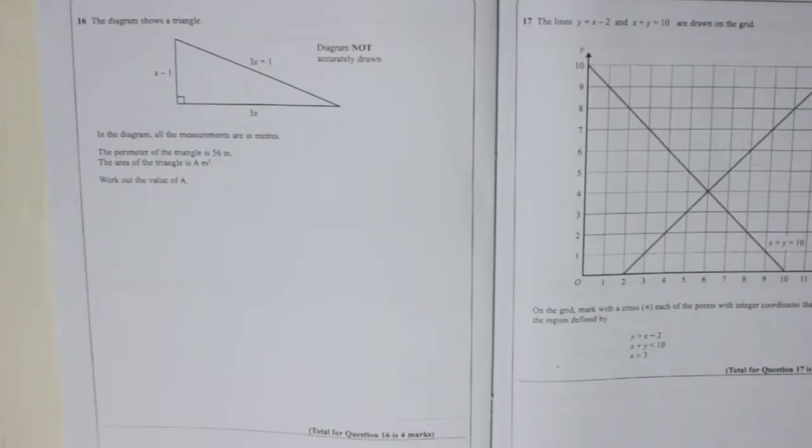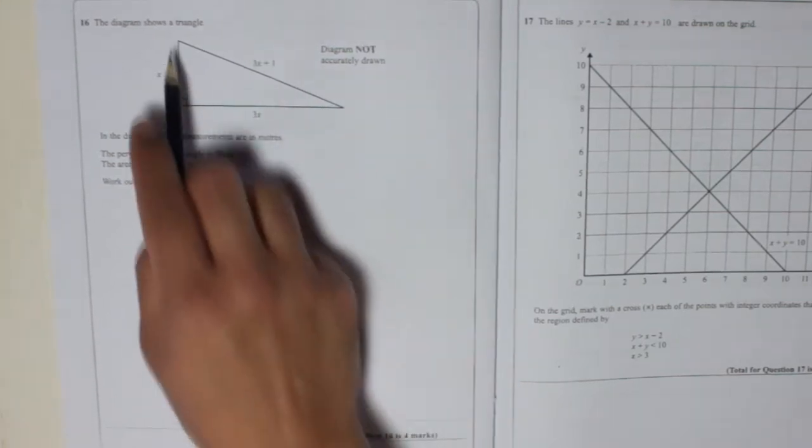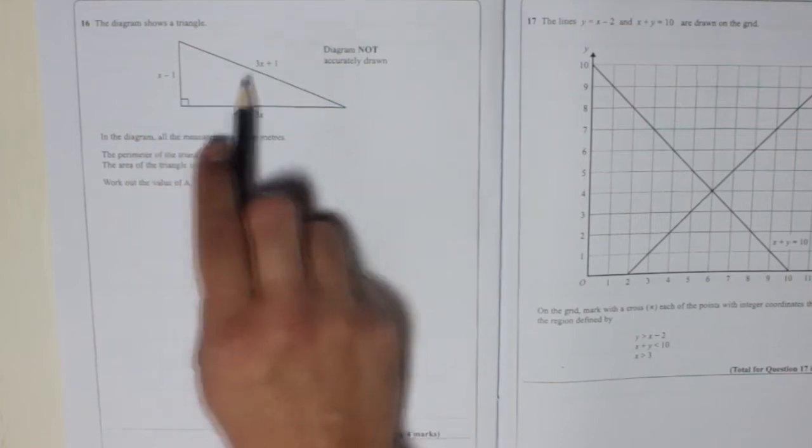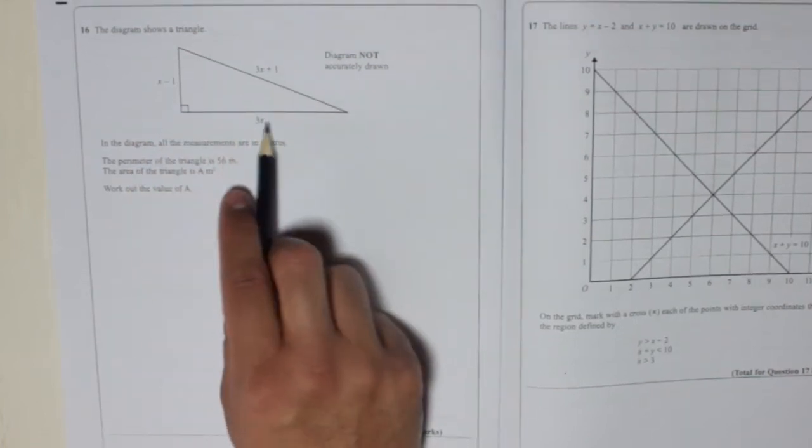Question 16. The diagram shows a triangle, so here you've got a right-angled triangle, but instead of measurements you've got letters and numbers: x minus 1, 3x plus 1, and 3x.